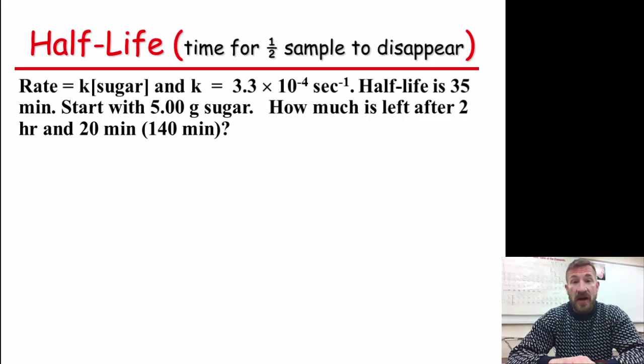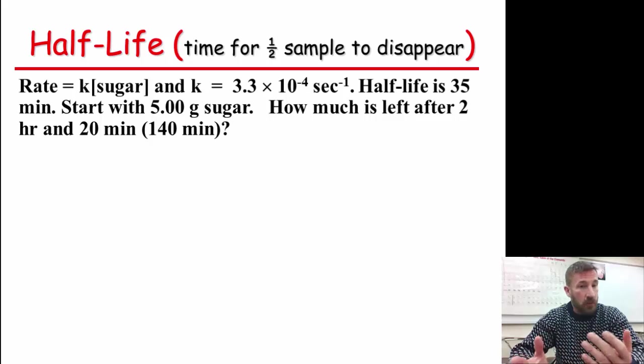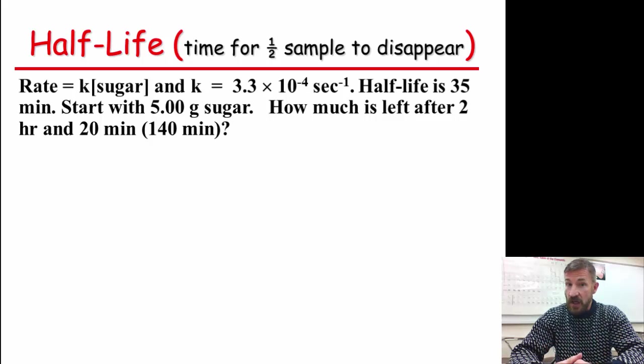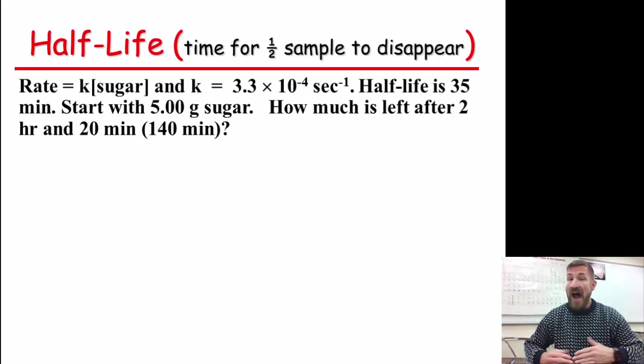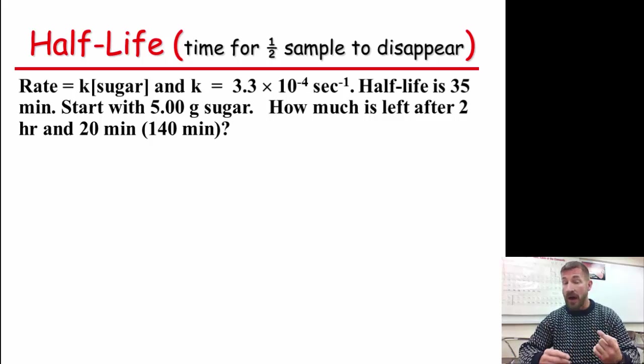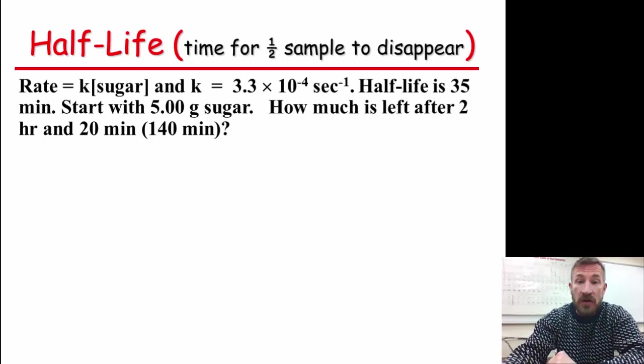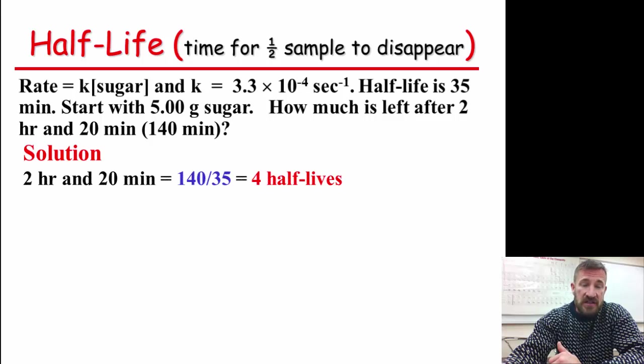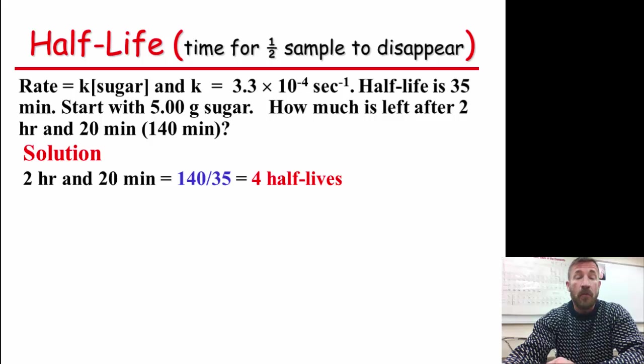Half-life, time remaining for a half of a sample to disappear. Let's say we have the rate law and the constant, and the half-life we know is 35 minutes, and we start with five grams of sugar. How much of that sugar is left after two hours and 20 minutes? We figure out that total time. It's 140 minutes. So the solution to doing this is to divide the 140 by the 35, which gives us four half-lives.